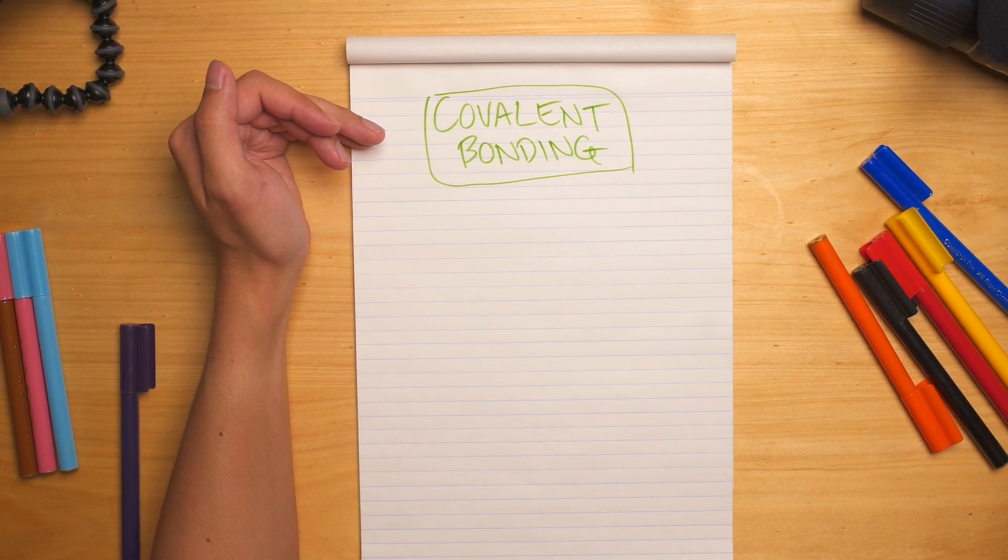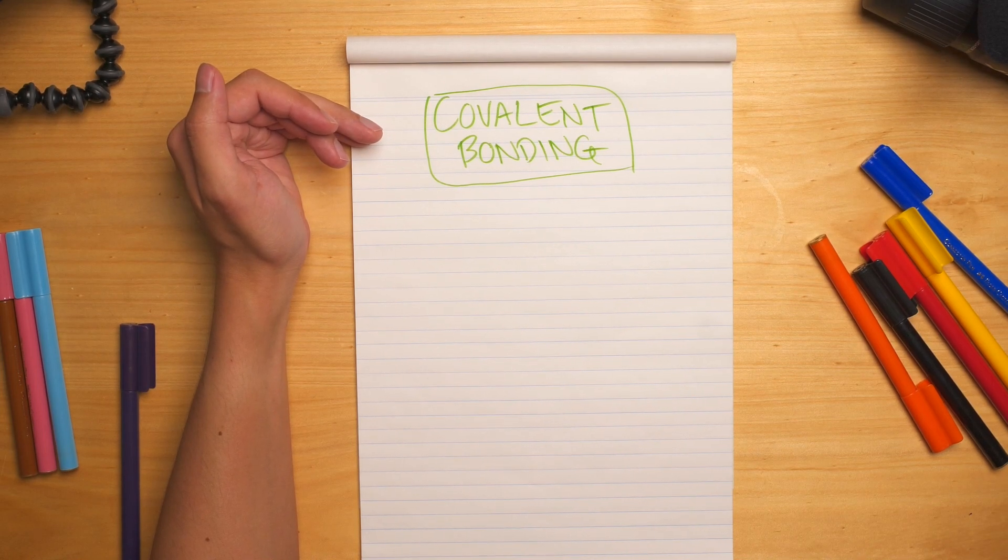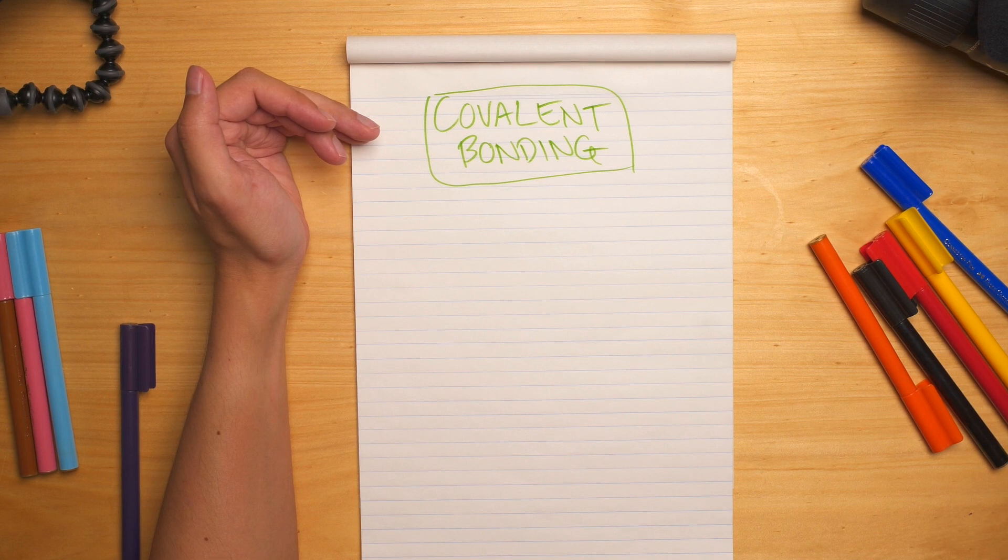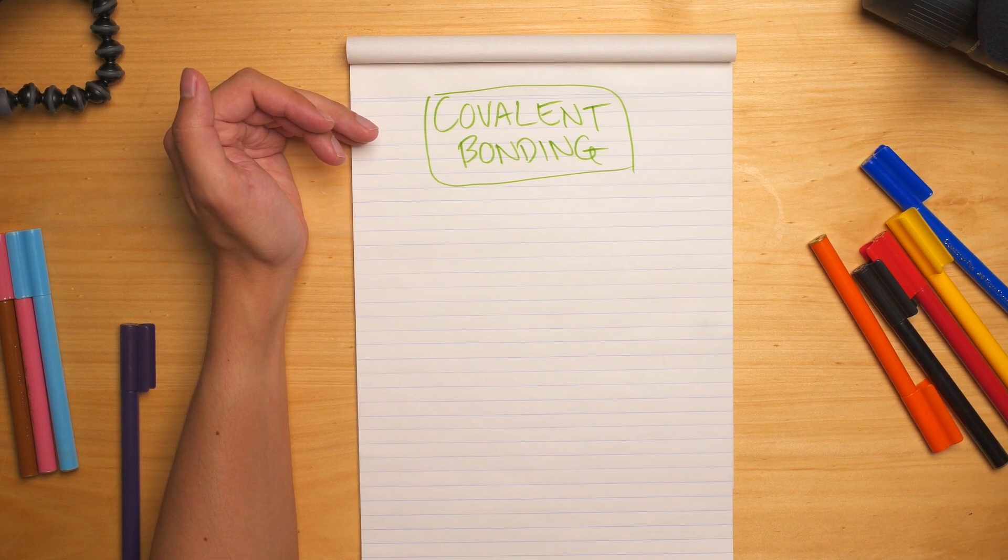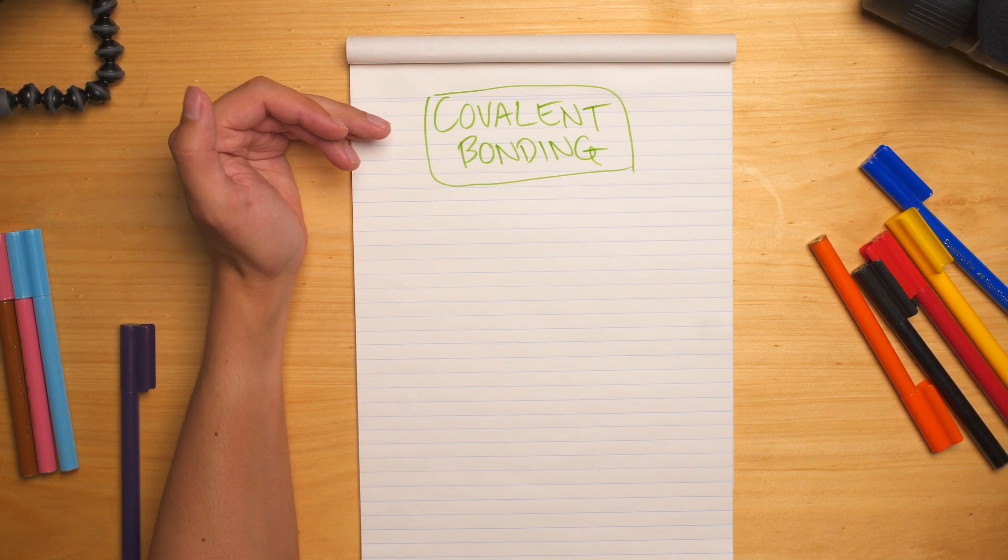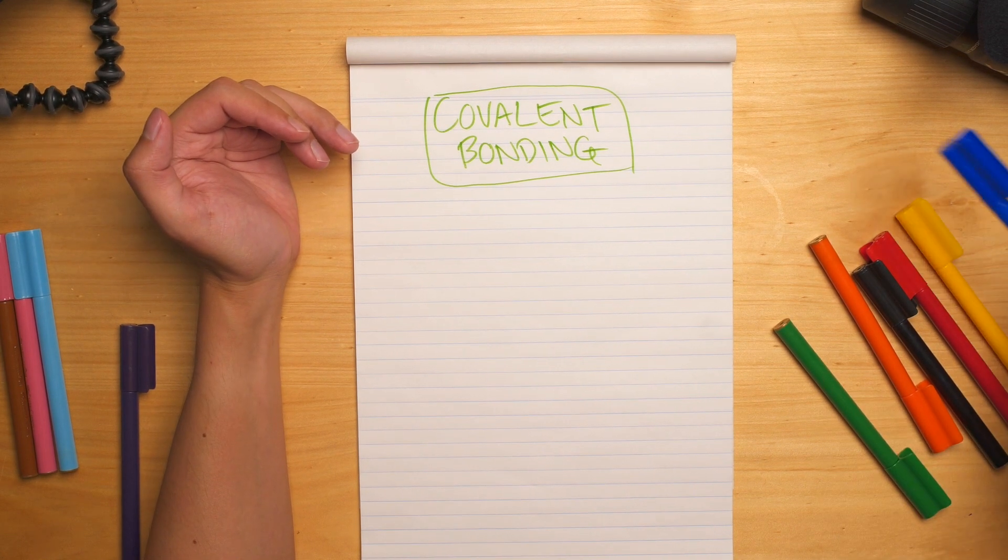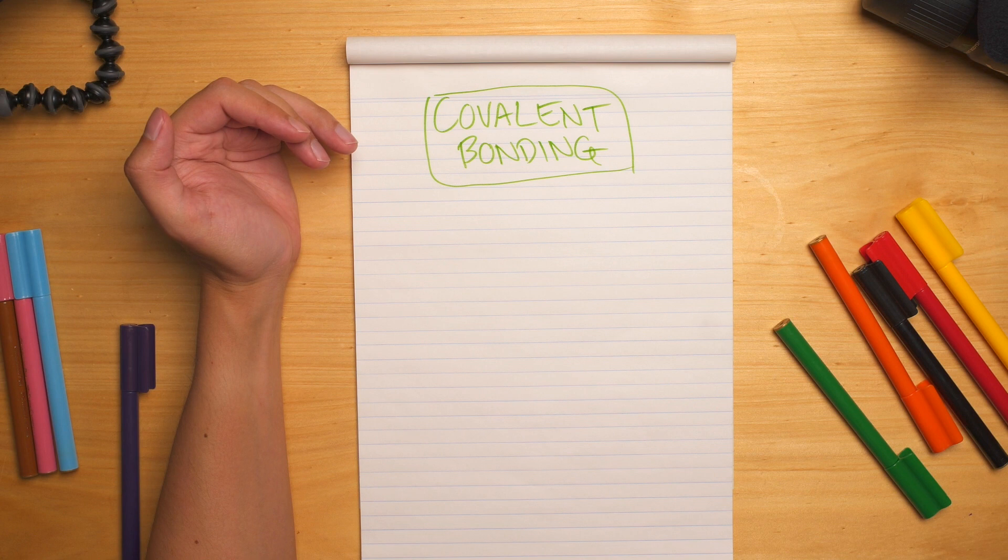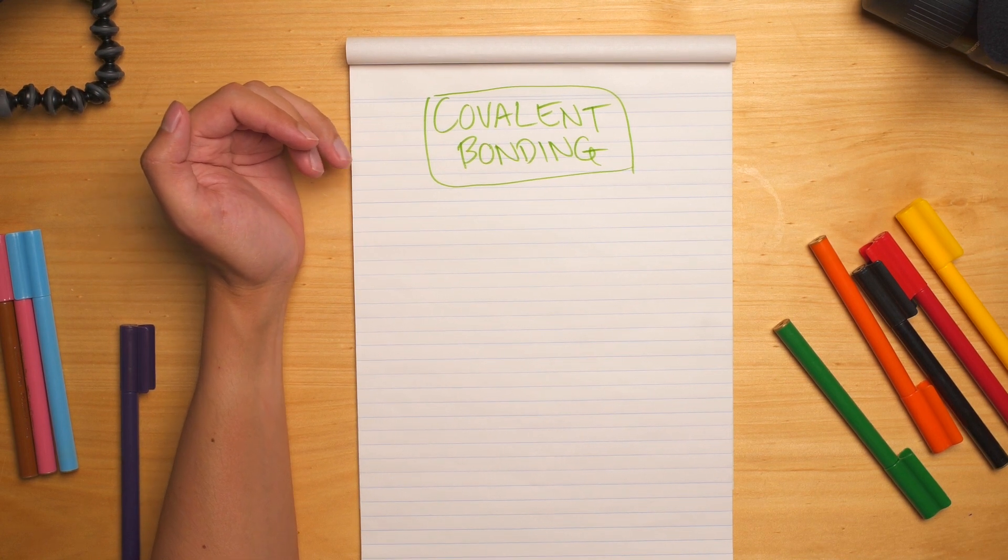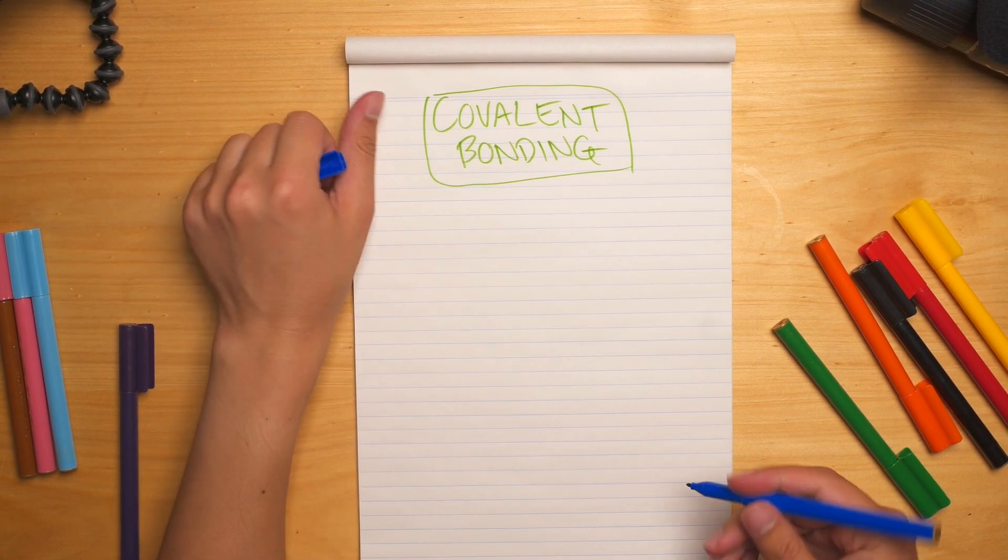Today's video is going to be about covalent bonding. No zero to hero series would be complete without it, plus I think my students need it for their exam relatively soon. So it's not that complicated. If you have your electron configurations down pat, this is just a small extension upon that.